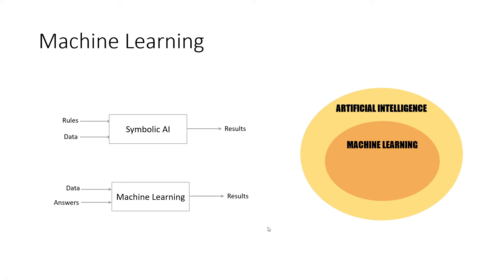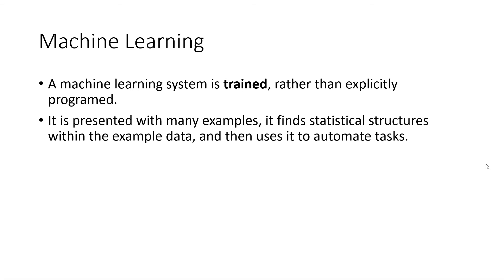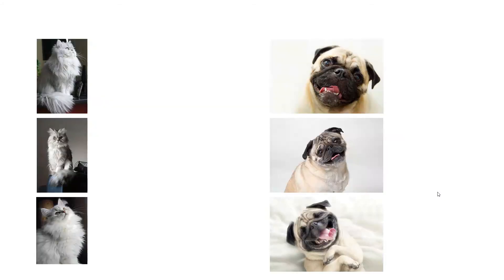So you can think of machine learning as a subset of overall artificial intelligence. To define it more formally, a machine learning system is trained rather than explicitly programmed. It is presented with many examples, then finds the statistical structures within that example data, and once it finds those statistical structures it uses them to automate future tasks.